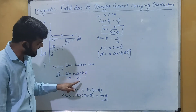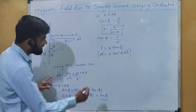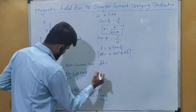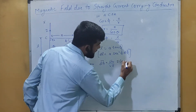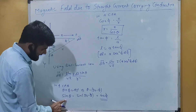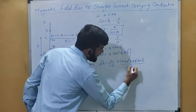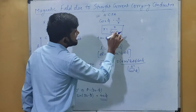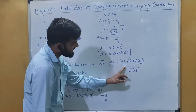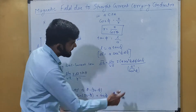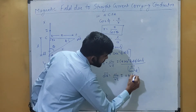So in the formula we have dL sin theta and r². We will replace all three. Substituting dL = A sec²φ dφ, sin θ = cos φ, and R² = A²/cos²φ, after simplification dB equals μ₀/4π × I/A × cos φ dφ.